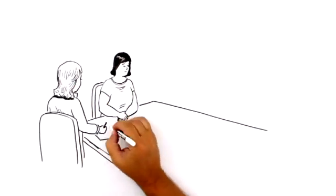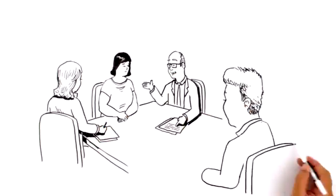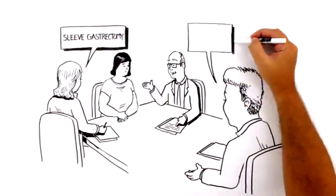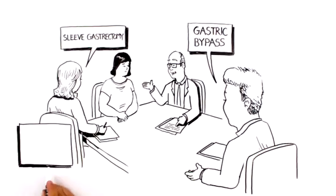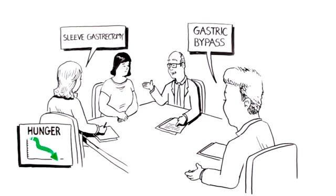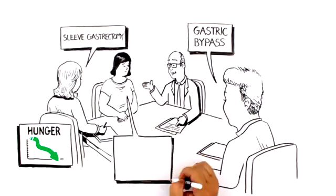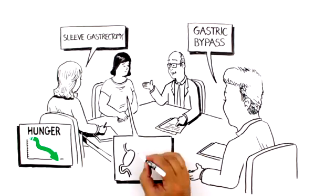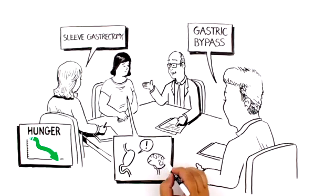Sarah's bariatric surgery team talks to her about two options, sleeve gastrectomy and gastric bypass. Both procedures decrease hunger and improve feelings of fullness when eating by decreasing stomach size, changing hormones released by the gut, and altering the way Sarah's stomach talks to her brain.